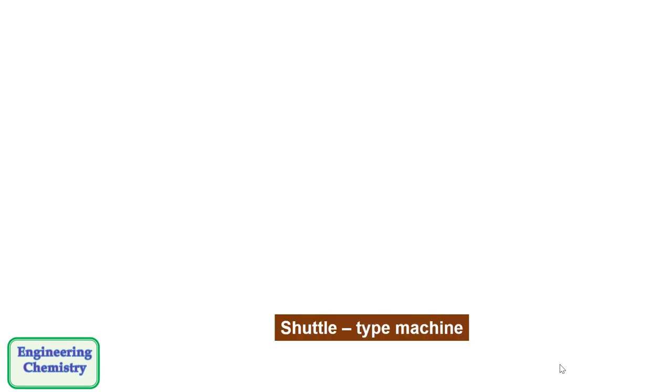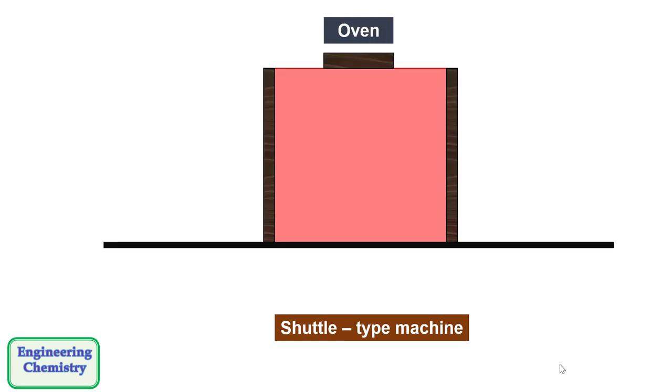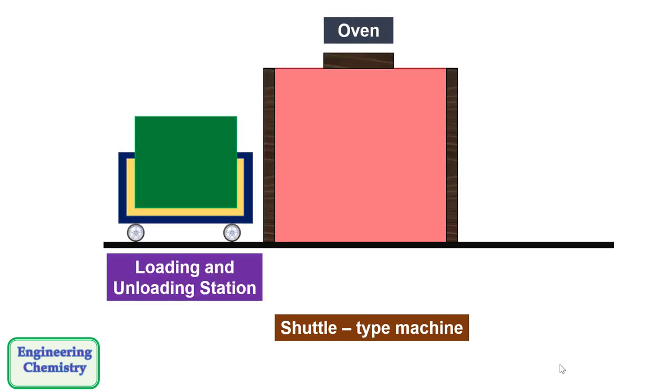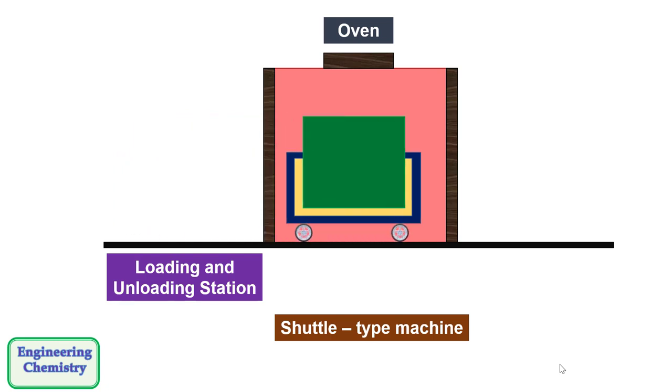A shuttle type machine is used for large products. It consists of oven at the center. A frame for holding a mold is mounted on a movable bed. The drive for turning the mold biaxially are incorporated in the bed which is on a track that allows the mold and bed to move into and out of the oven.